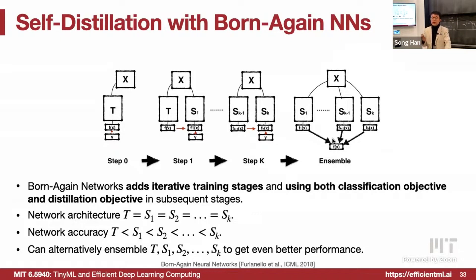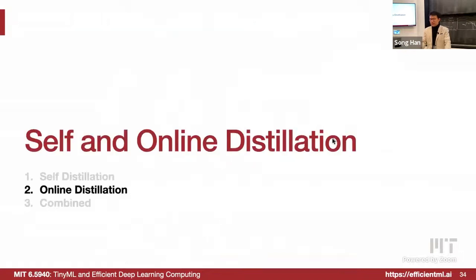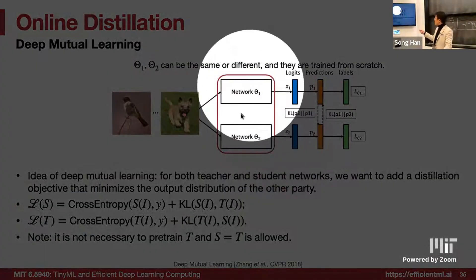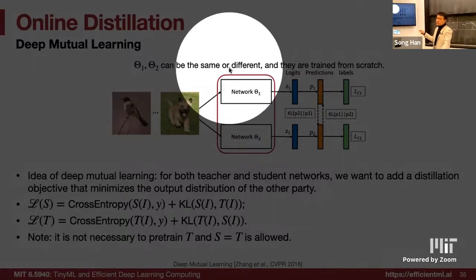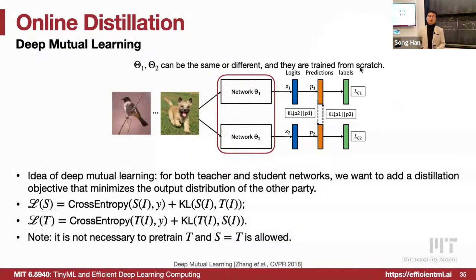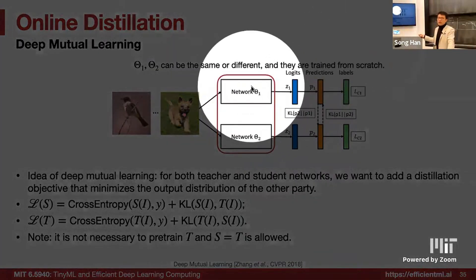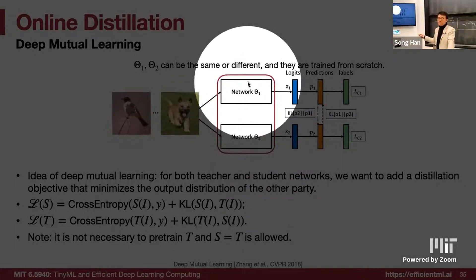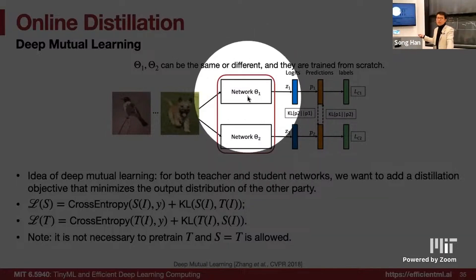That's the interesting part where teacher and student are of the same size. We can also do online distillation, where we have two networks that can be the same size — not necessarily teacher larger than student — and they are trained from scratch. Rather than first training the teacher then doing distillation, now nobody has a teacher; everybody starts from scratch. Network 1 is the teacher of Network 2 when training Network 2, and Network 2 is the teacher of Network 1 when training Network 1 — they act as teachers of each other.